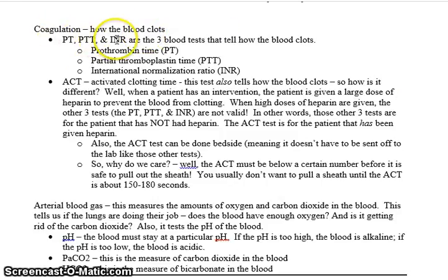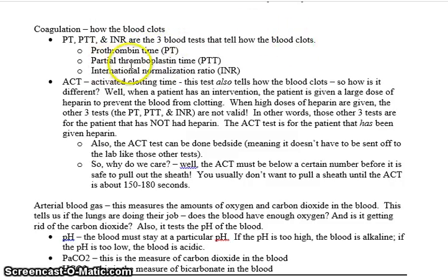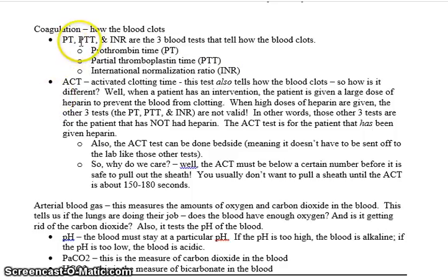Moving on to coagulation, meaning how the blood clots. You have the PT, PTT, and INR — those are the three tests that tell how the blood clots. PT stands for prothrombin time, PTT for partial thromboplastin time, and INR is international normalization ratio.